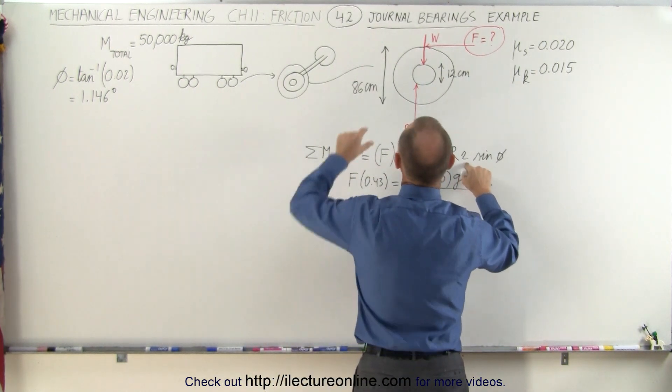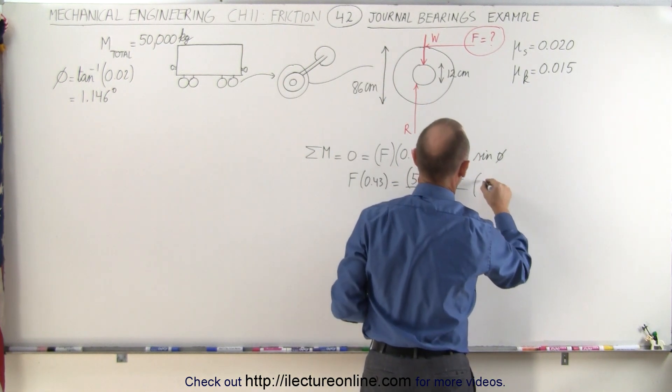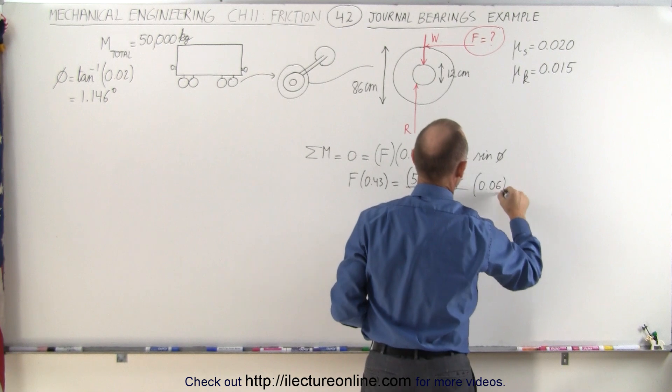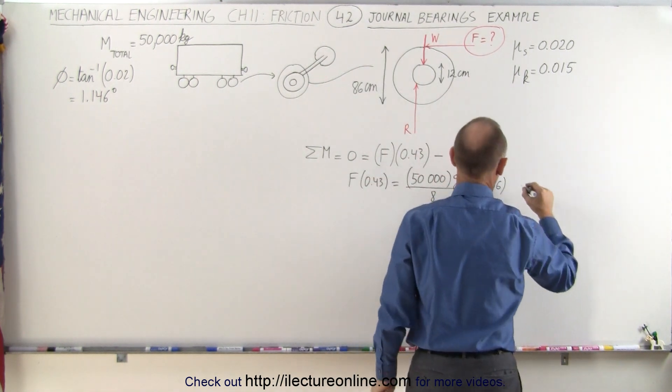r is going to be the radius of each of the axles, which in this case would be 6 centimeters, 0.06 meters, and then the sine of phi, which is a sine of 1.146 degrees.